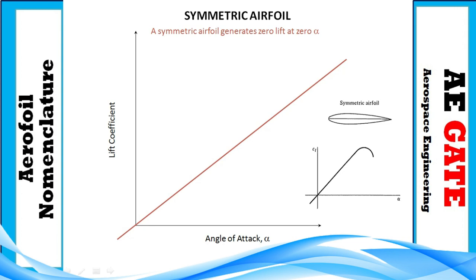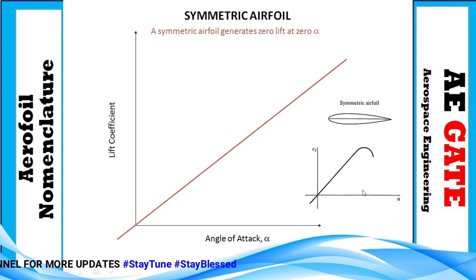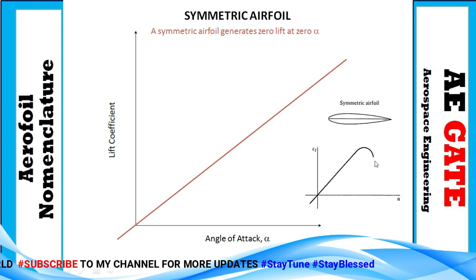The airfoil can be classified into two forms: symmetric and cambered. In a symmetric airfoil, both the upper and lower curvatures are the same. At zero angle of attack, the lift coefficient CL is also zero. By increasing the angle of attack, some lift is generated, reaching maximum lift at around 15 to 22 degrees alpha, beyond which it leads to stall.